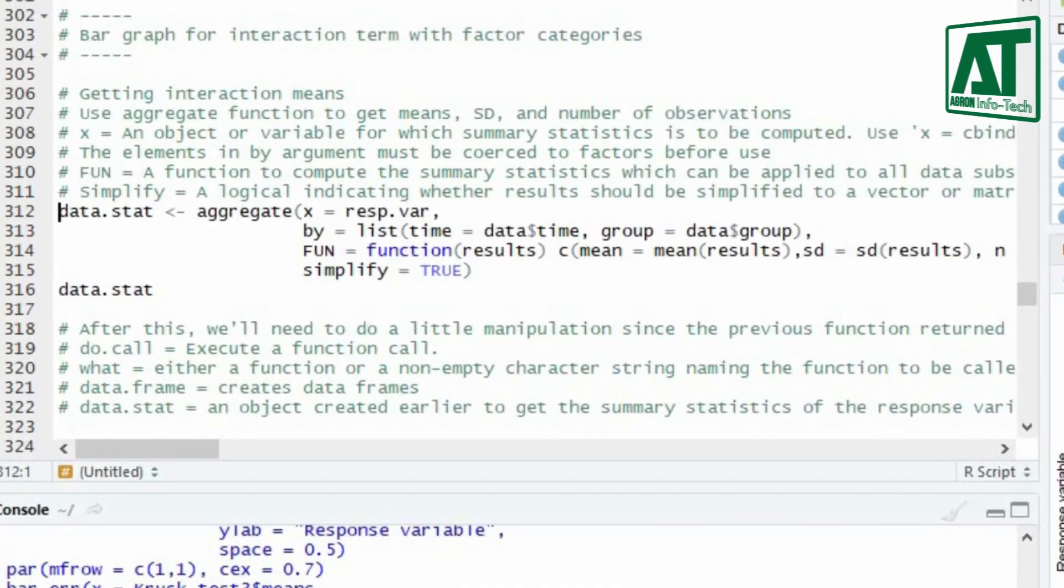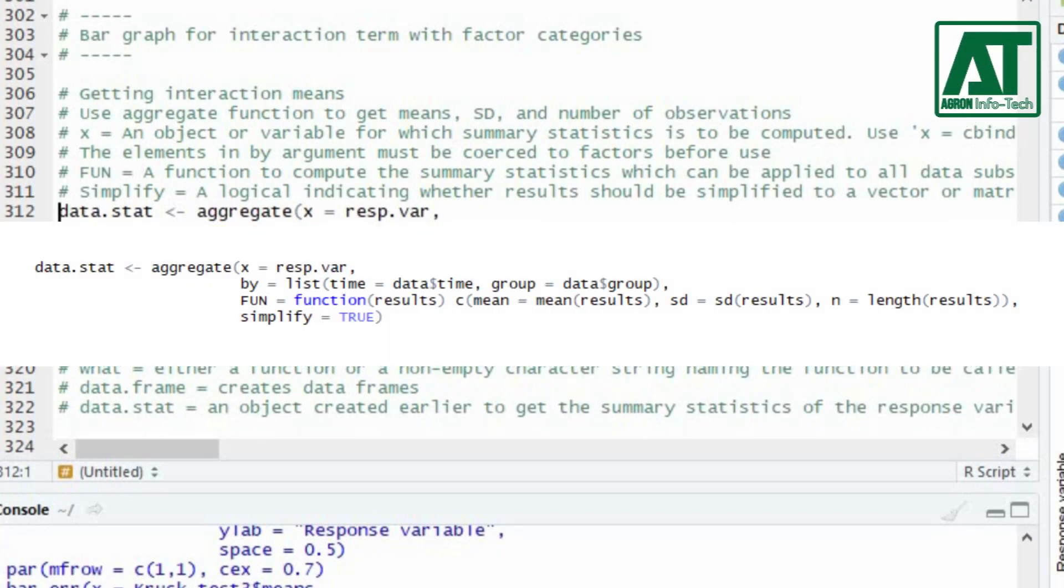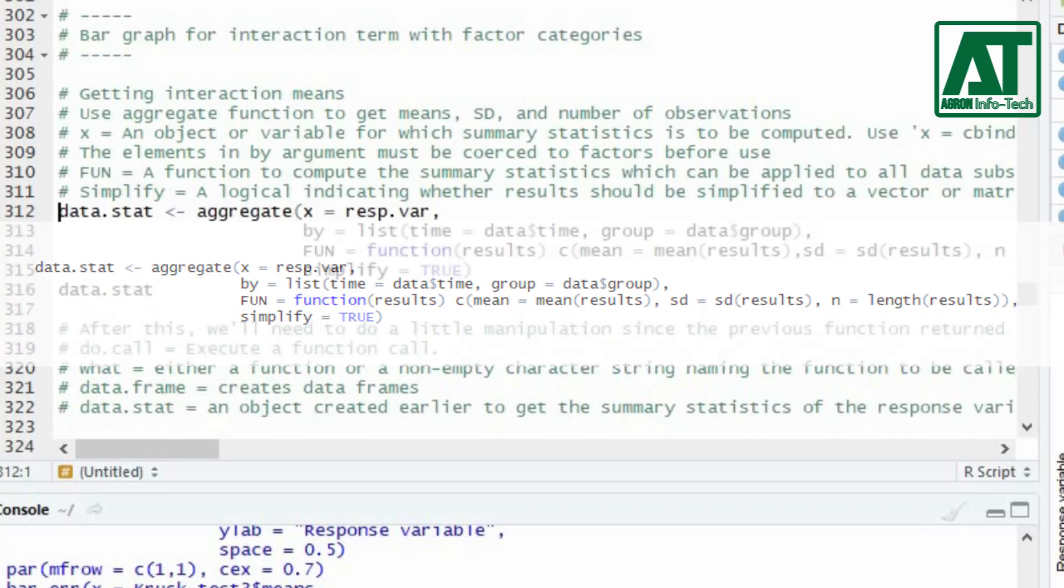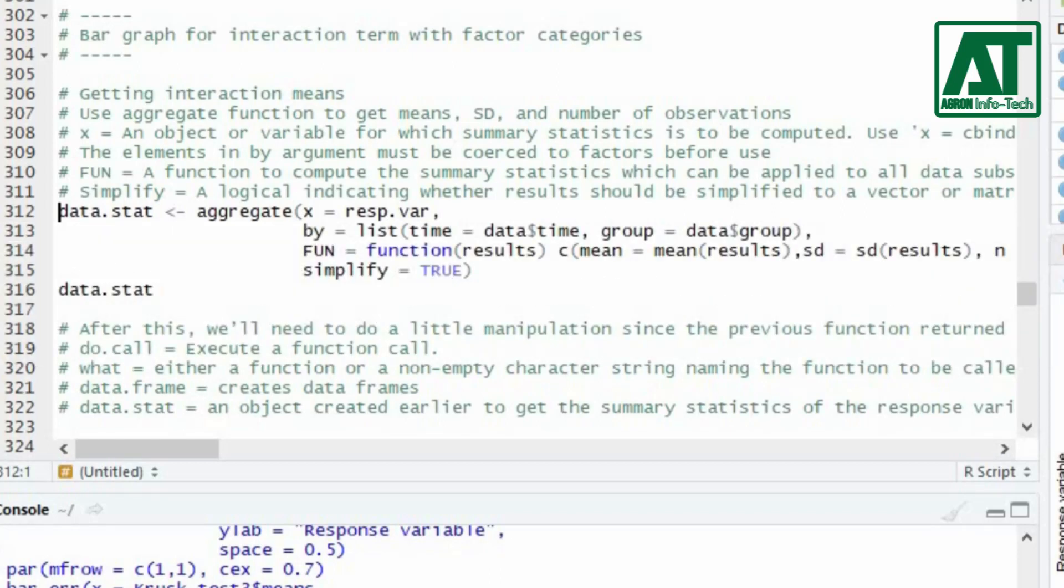First compute summary statistics by using aggregate function. This function will provide information for means, standard deviation, and number of observations. This function requires an object x or variable for which summary statistics to be computed. In by argument you can specify the number of independent variables or factors. The elements used in by argument must be coerced to factors before using here.